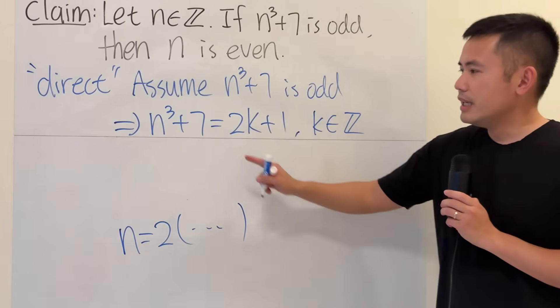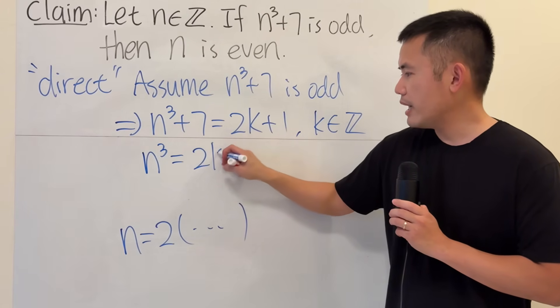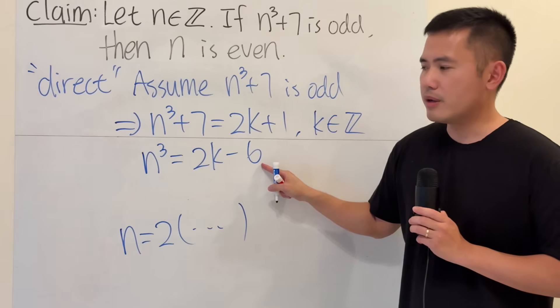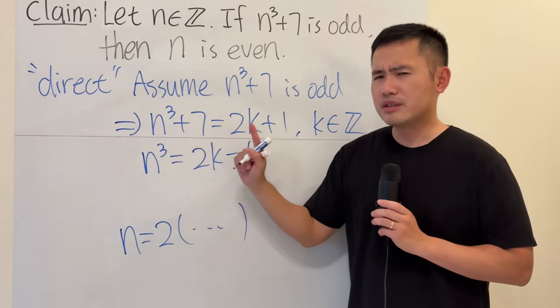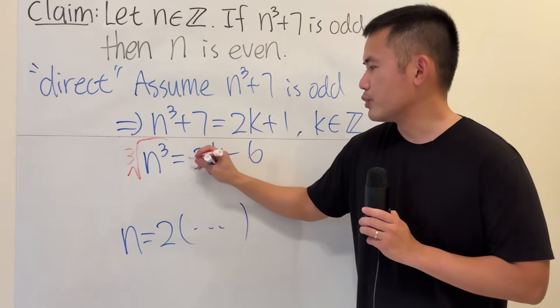But let's see, subtract 7 from both sides, so that's n cubed equals 2k minus 6. Yes, I can factor out 2 right here, but this is n cubed. So to get n by itself, I will have to take the cube root of both sides.